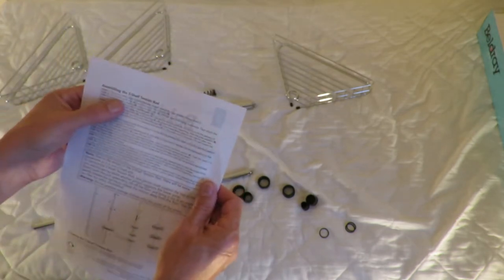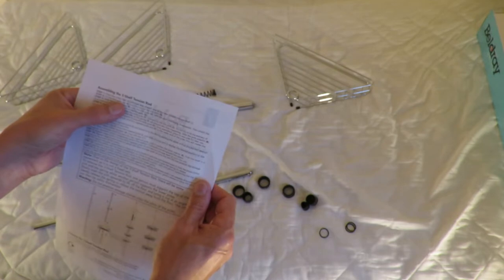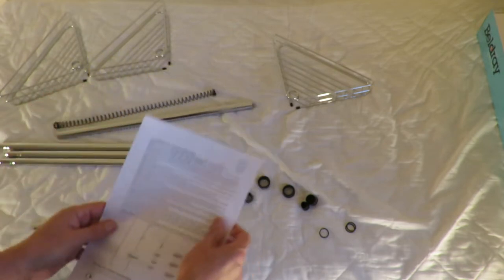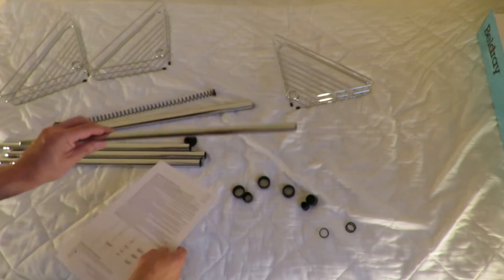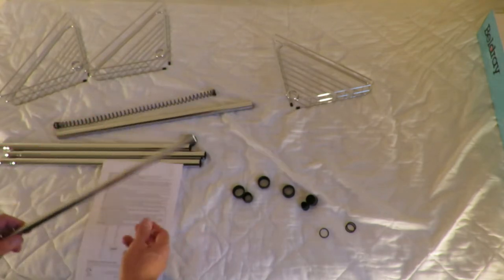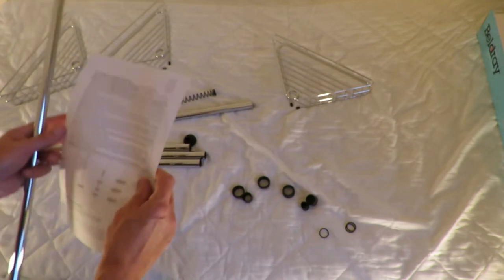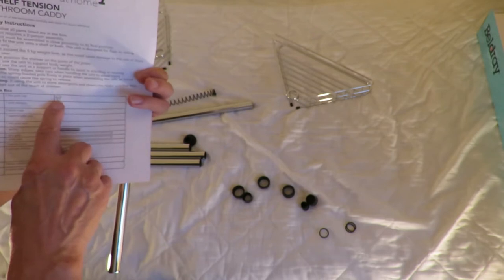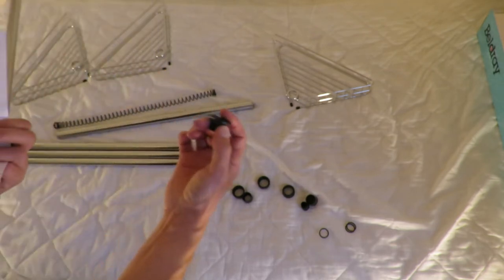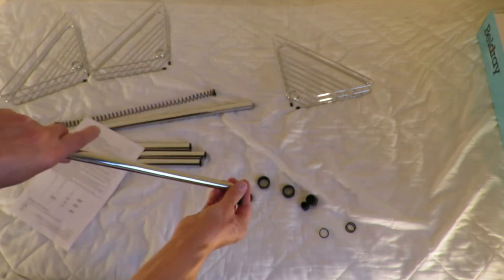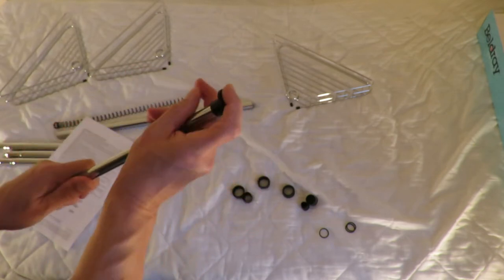Step two, fit thin pole cap A onto the top of the thin pole G. That's the thin one, because it's thinner than all the others. Thin pole cap A. That one, there's only one that looks like that. On the top, done.